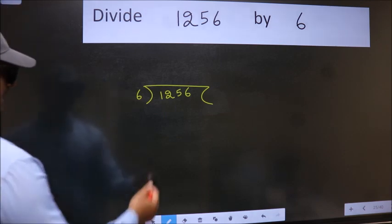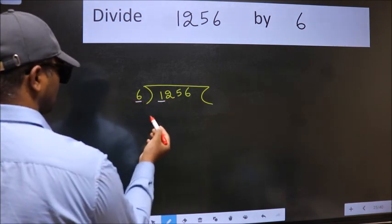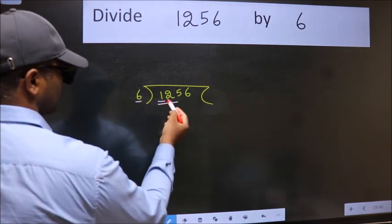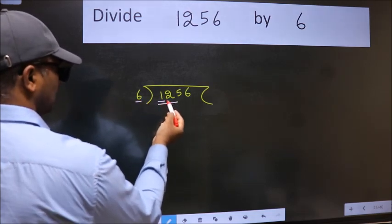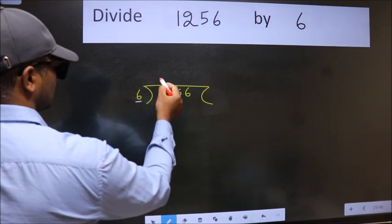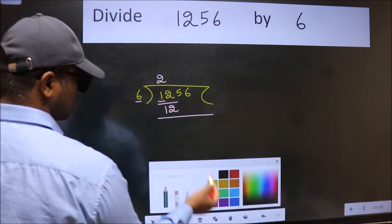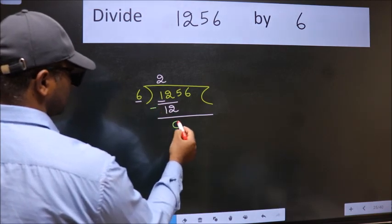Next, here we have 1 and here 6. 1 is smaller than 6. So we should take two numbers, 12. When do we get 12 in 6 table? 6 twos, 12. Now we should subtract. We get 0.